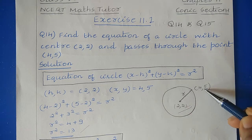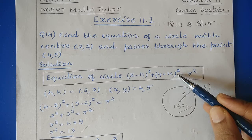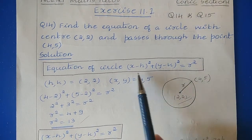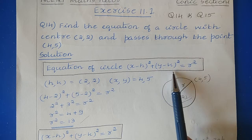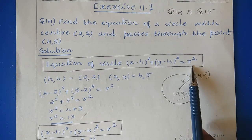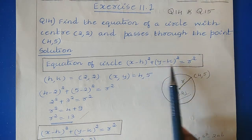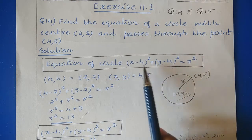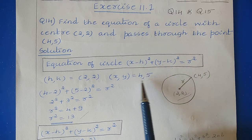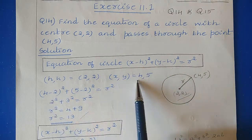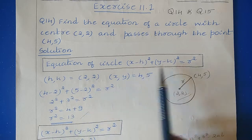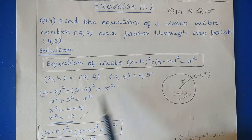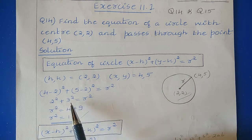We know that the general equation of the circle is (x − h)² + (y − k)² = r². Now put h, k as 2, 2 and x, y as 4, 5. Then we get (4 − 2)² + (5 − 2)² = r², that is 2² + 3² = r².